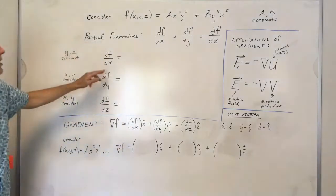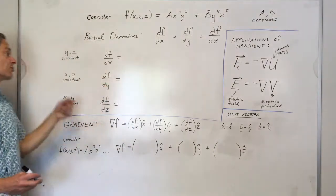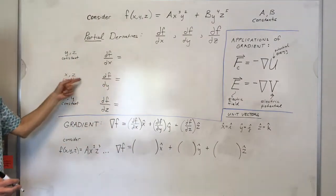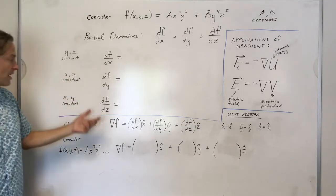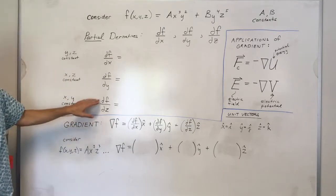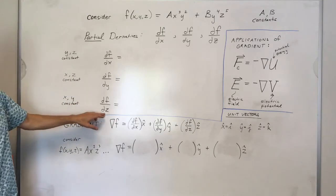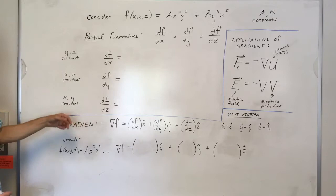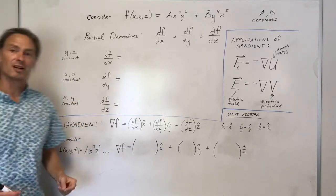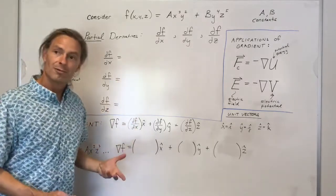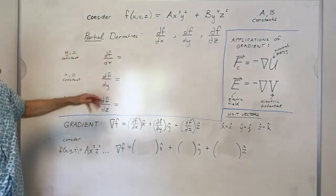If you take the partial derivative of f with respect to y, you treat x and z as constants. And likewise, if you take the partial derivative of f with respect to z, you treat x and y as constants. So let's take these derivatives.